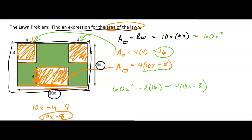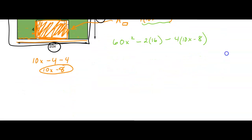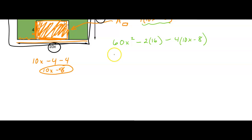Now your problems aren't going to be quite this complicated, but it's kind of fun to look at some of these problems. It's a good idea to think in terms of area and what we're doing. So if we simplify that: 60x² - 32 - 40x + 32, and that's going to simplify to 60x² - 40x. That answers the question—that's an expression for the area of the rectangle, the grassy area of the lawn.